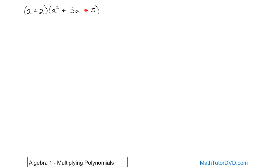If you cover up the 5 — if the 5 wasn't even there, so there were just 2 terms — you already know how to do that. You take a times this and a times that, then 2 times this and 2 times that. But now you have a third term, so you just distribute a into all three of these terms.